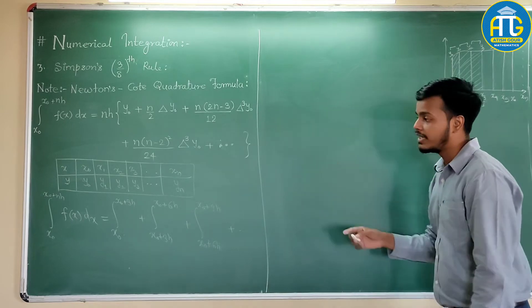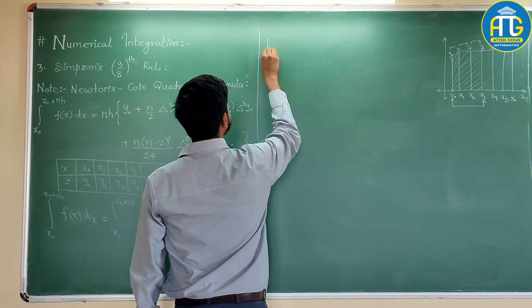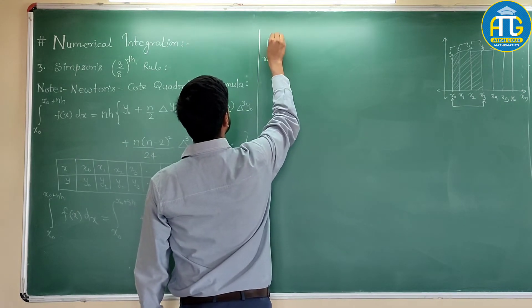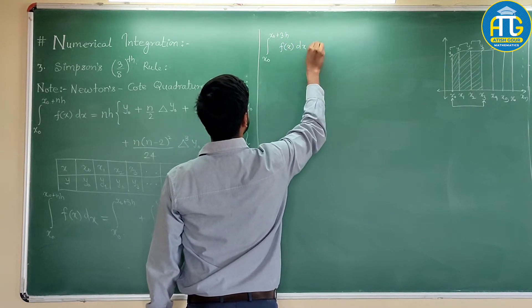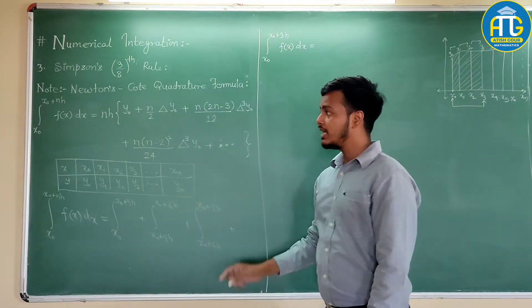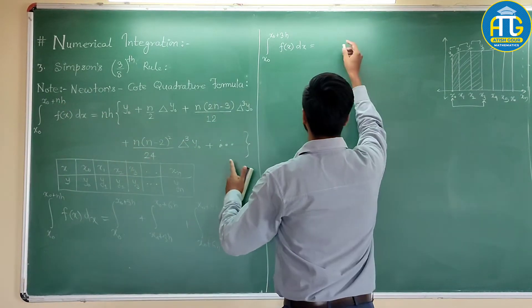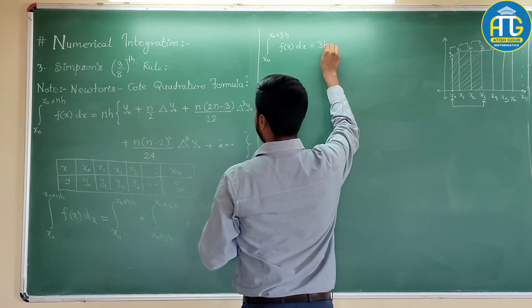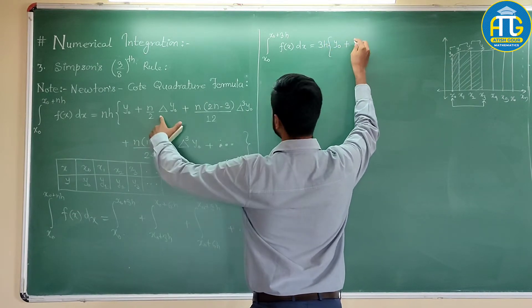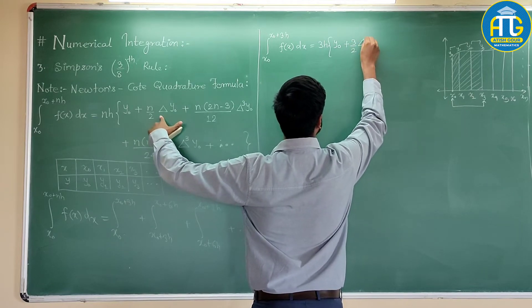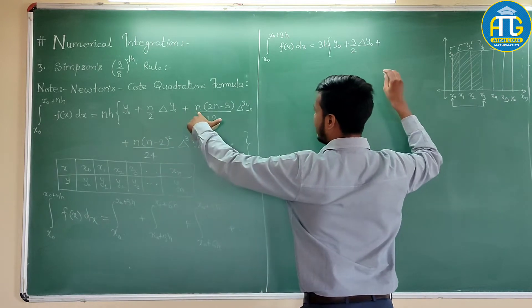So let us first of all derive this. So I will first of all find out this value, that is integration from x0 to x0 plus 3h, f of x dx. This can be found out by making use of this formula by putting n is equal to 3. So this would be 3h, here it is y0 plus, this is 3 by 2 delta y0 plus, this n is 3.